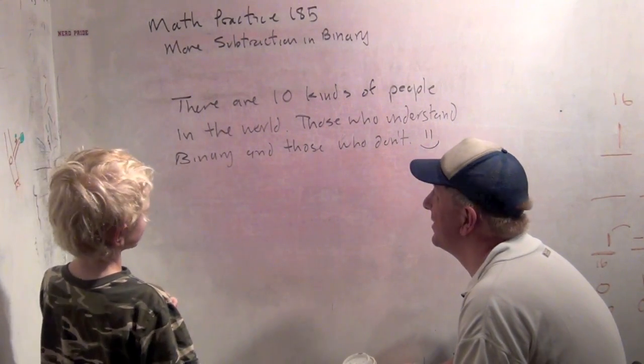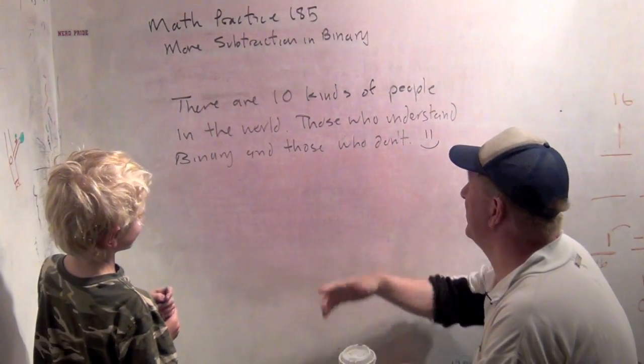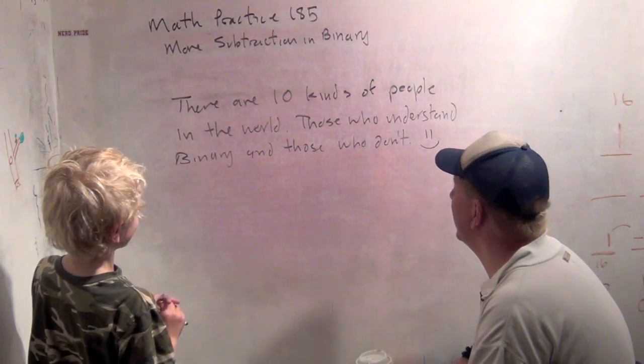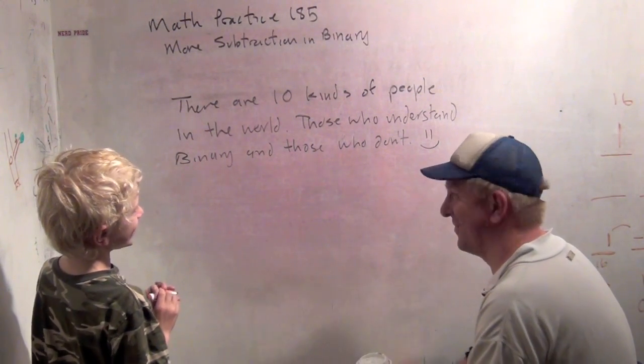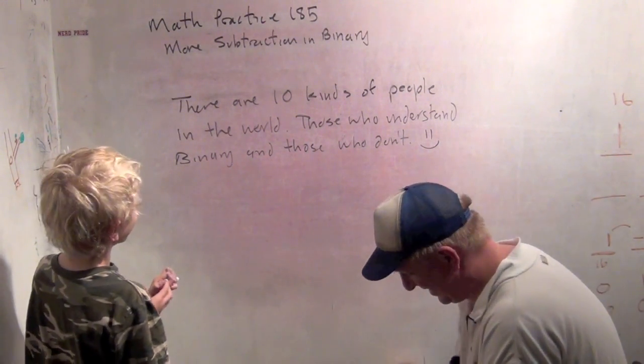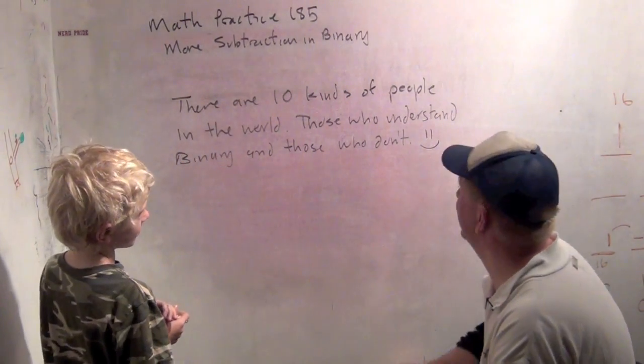There are one-zero kinds of people in the world. Those who understand binary and those who don't. I get it! Do you get it? Yeah, one-zero is two in binary. That's a pretty funny joke.